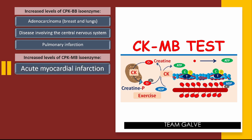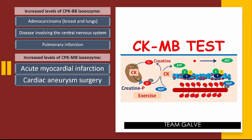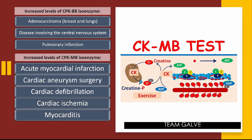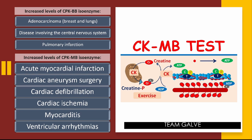Increased levels of CPK-MB isoenzyme may indicate: myocardial infarction (acute MI), cardiac aneurysm surgery — generally anything related to cardiac muscle. CK-MB normal value is 0%. It may also indicate cardiac defibrillation, cardiac ischemia, myocarditis (inflammation of the myocardium), and ventricular arrhythmias. These are the disorders when there is increased CPK-BB or CPK-MB.